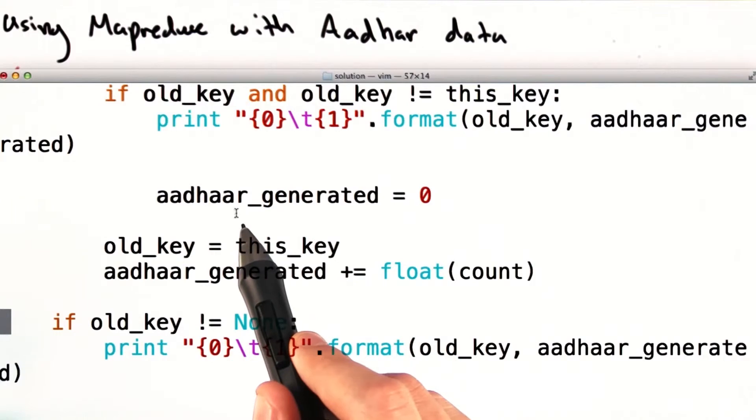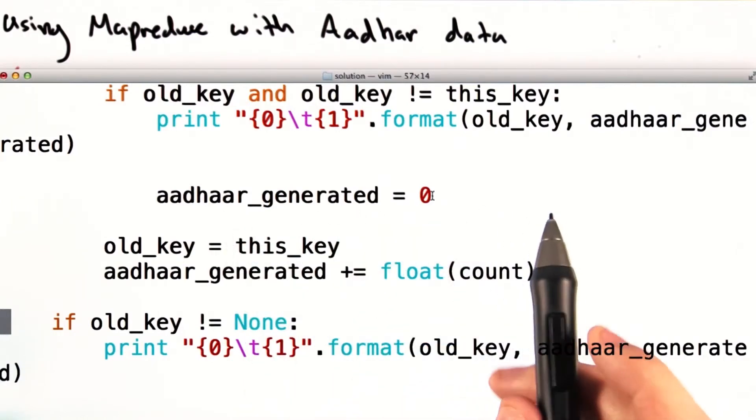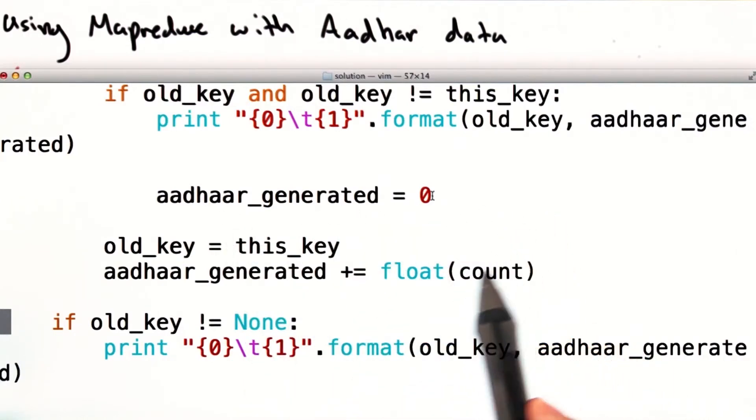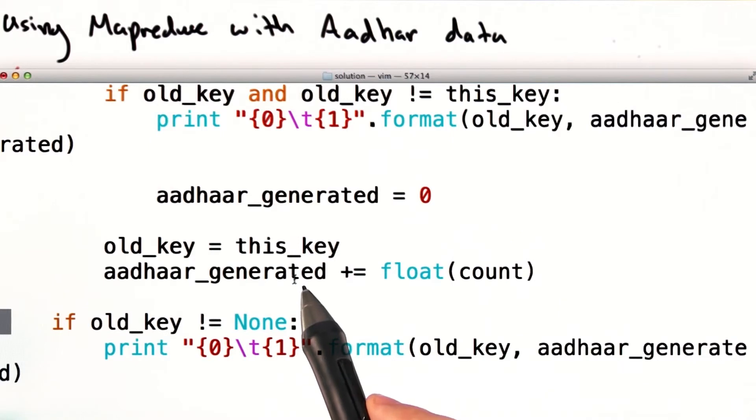Then, let's set Aadhaar generated equal to zero. Otherwise, let's add the number of Aadhaar generated in this particular key value pair to the total number of Aadhaar generated for this key. And let's continue on to the next value.